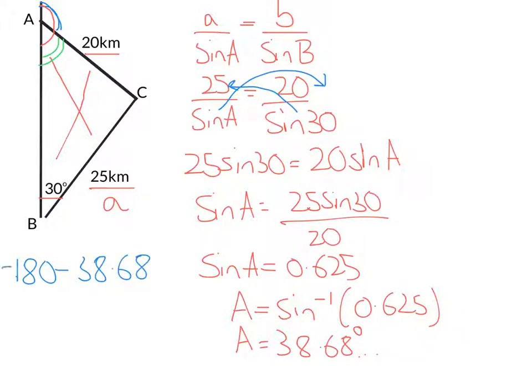Put that into my calculator and get 141.32. So I'd say the bearing of C from A is 141 degrees.